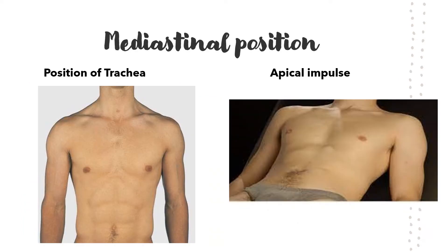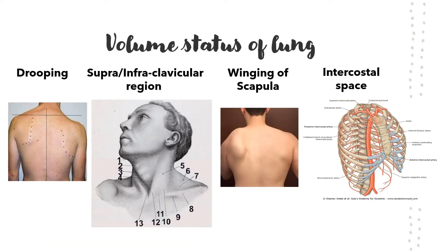Consolidation does not cause a change in mediastinal position. The trachea will be in the midline and the apical impulse will be on the left, about an inch medial to the mid-clavicular line — no displacement of the mediastinum occurs in consolidation. The volume status of the lung will also be unaffected: there will be no drooping, no supraclavicular hollowing or fullness, no winging of the scapula, and no change in the intercostal space.